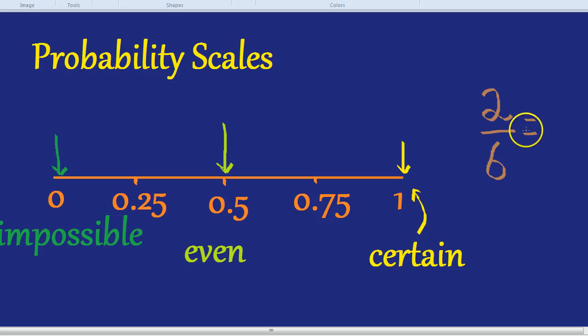We can simplify this fraction, two out of six, to become, if we divide by two, one out of three. Now one out of three means a third. So we go a third the way along our chart. In other words, the chances of getting a one or a two is more than a quarter but less than a half. It would be 0.33, which is roughly here.